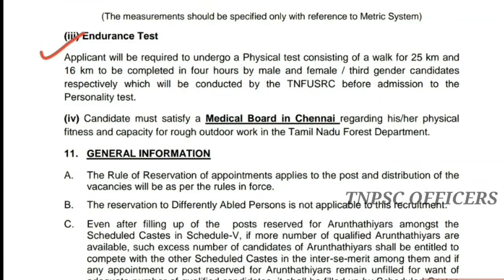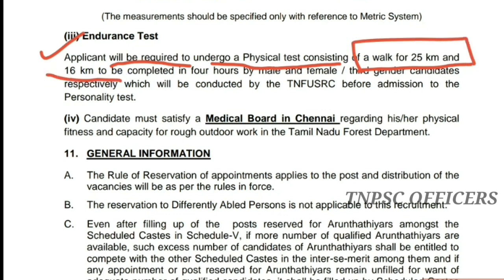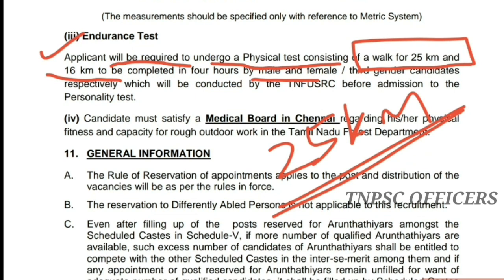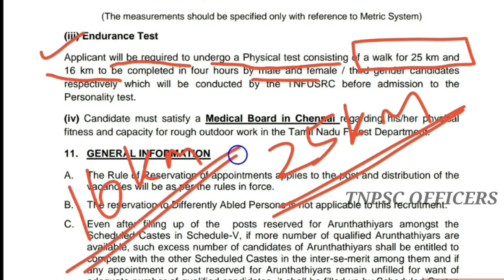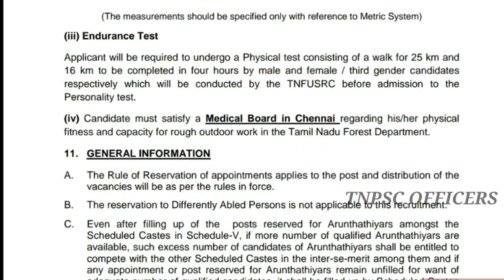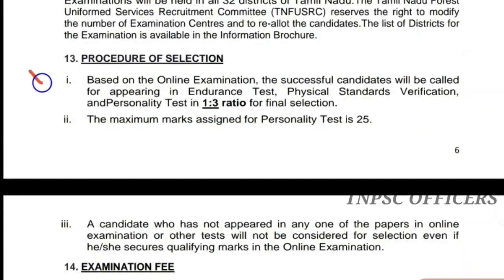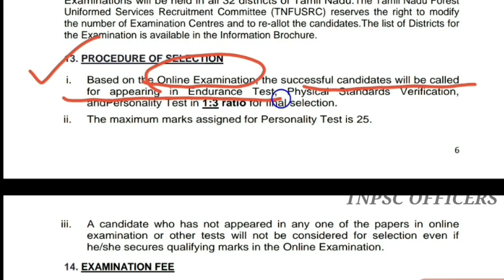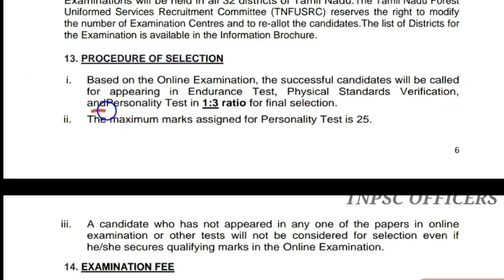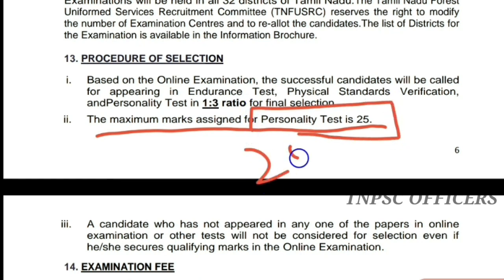There is an endurance test: a walk of 25 km for females and 60 km for males, along with other physical endurance components. The procedure of selection is: based on the online examination, successful candidates appear for the endurance test. After clearing the cut-off and the endurance test, there is physical standard verification, followed by a personality test and interview at a 1 to 3 ratio. The final selection includes a personality test worth 25 marks.